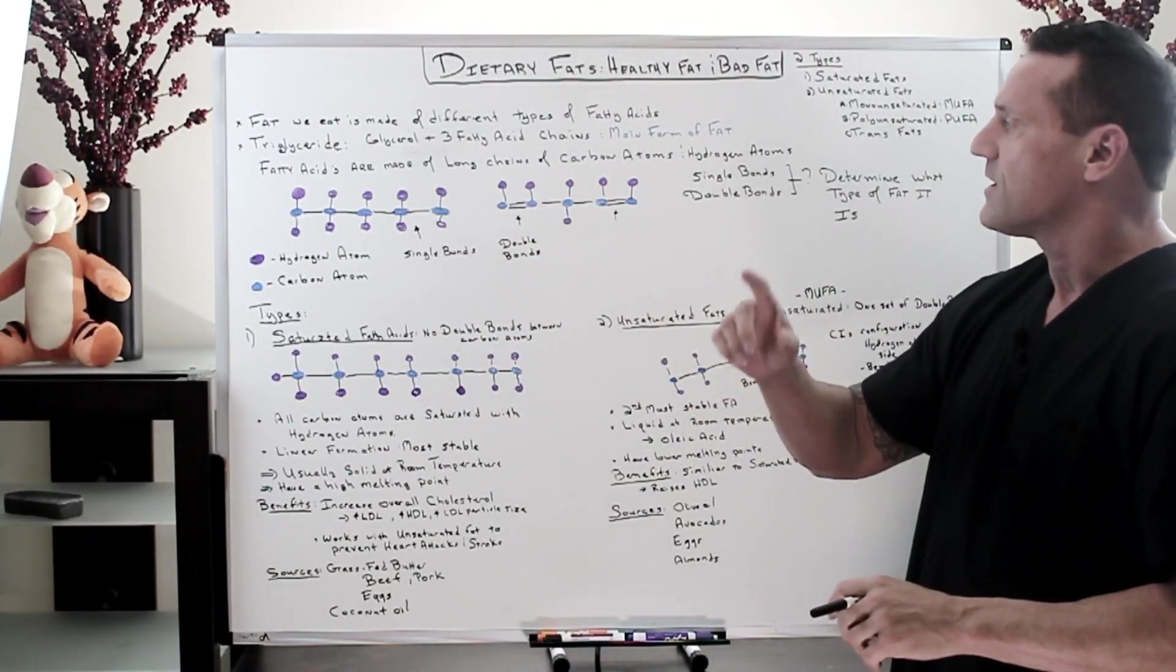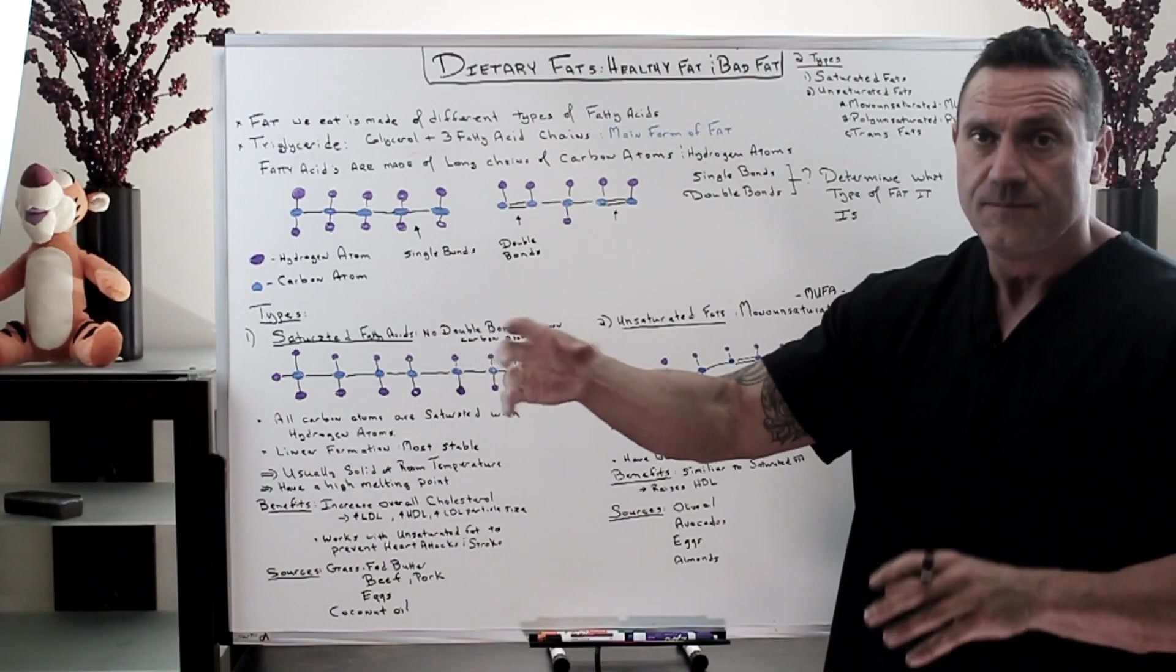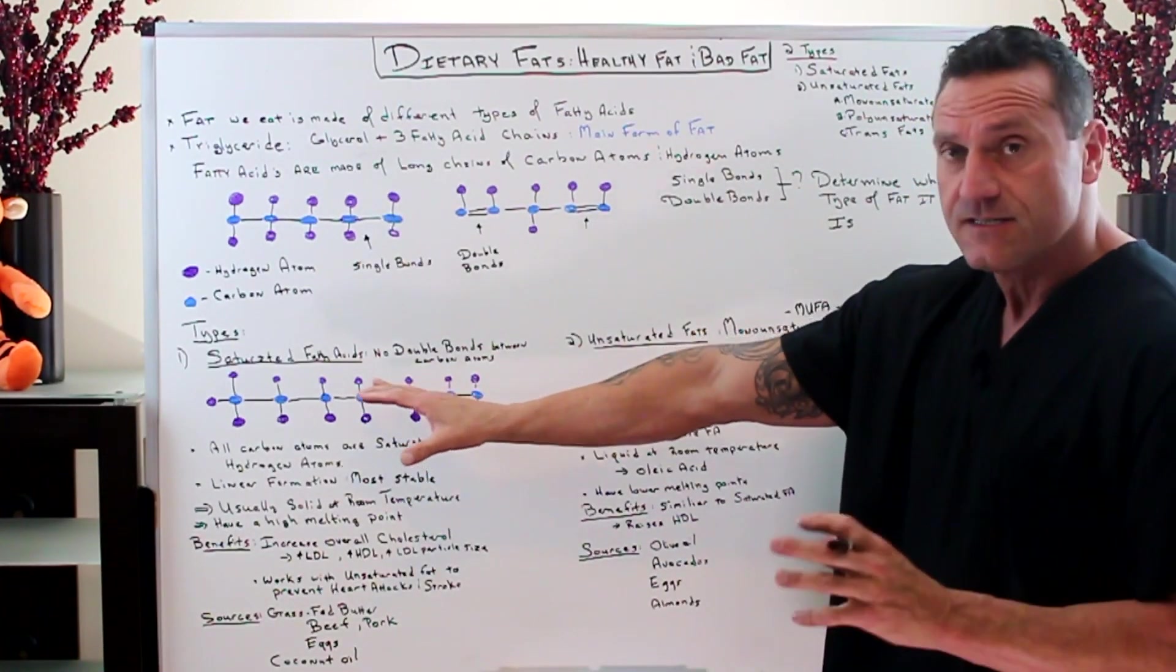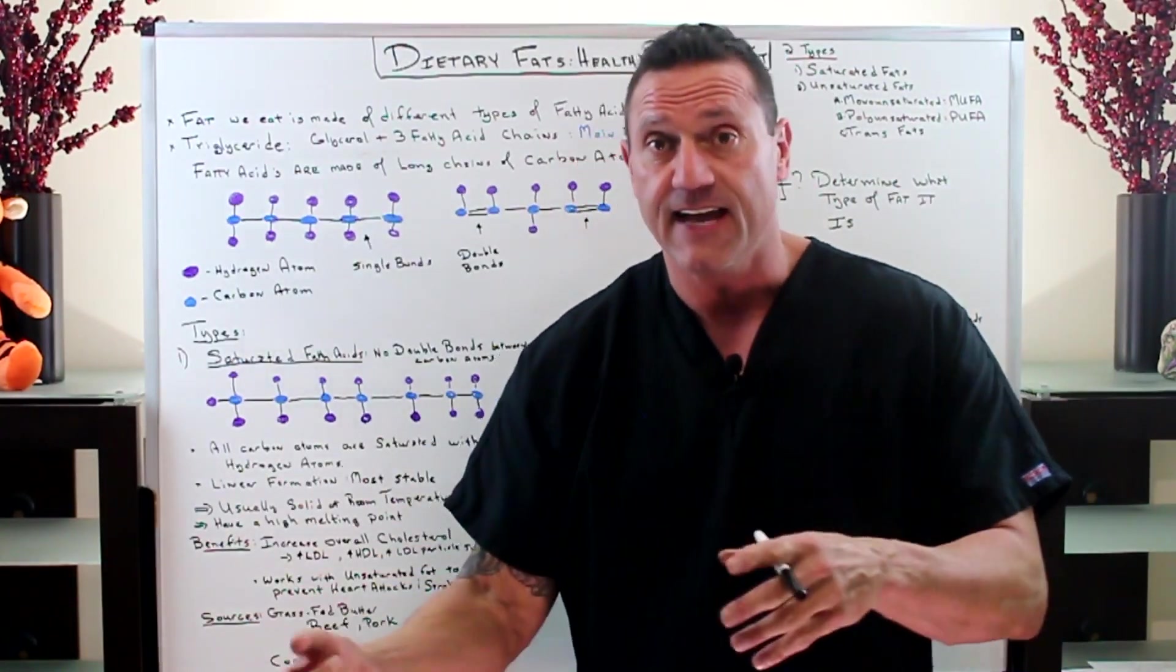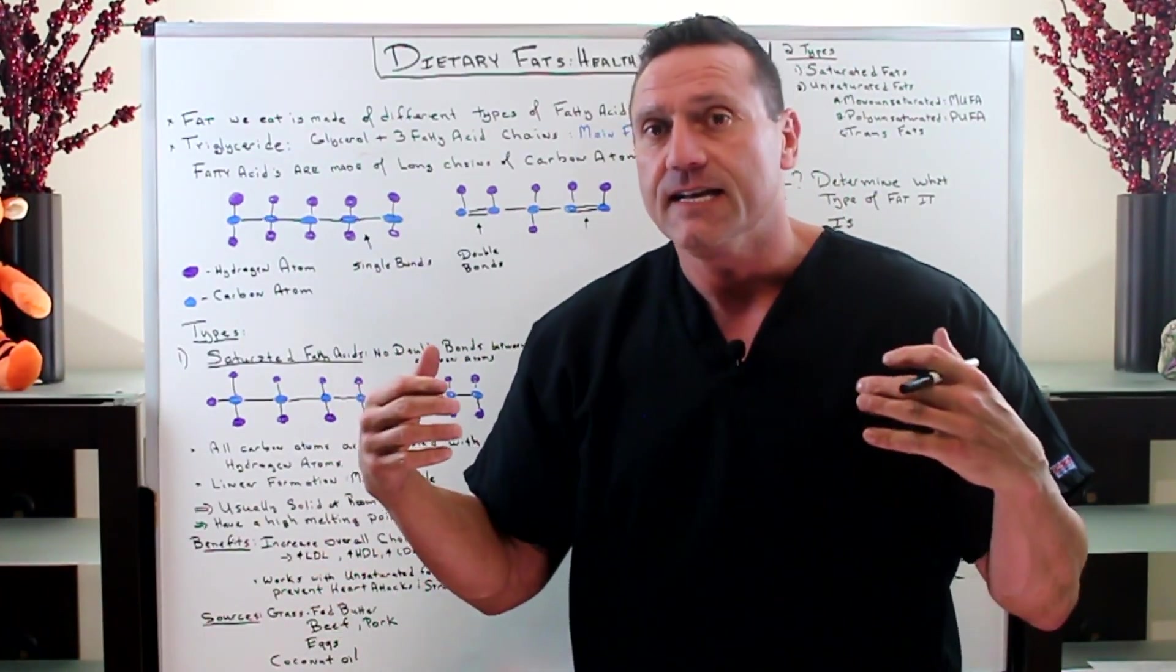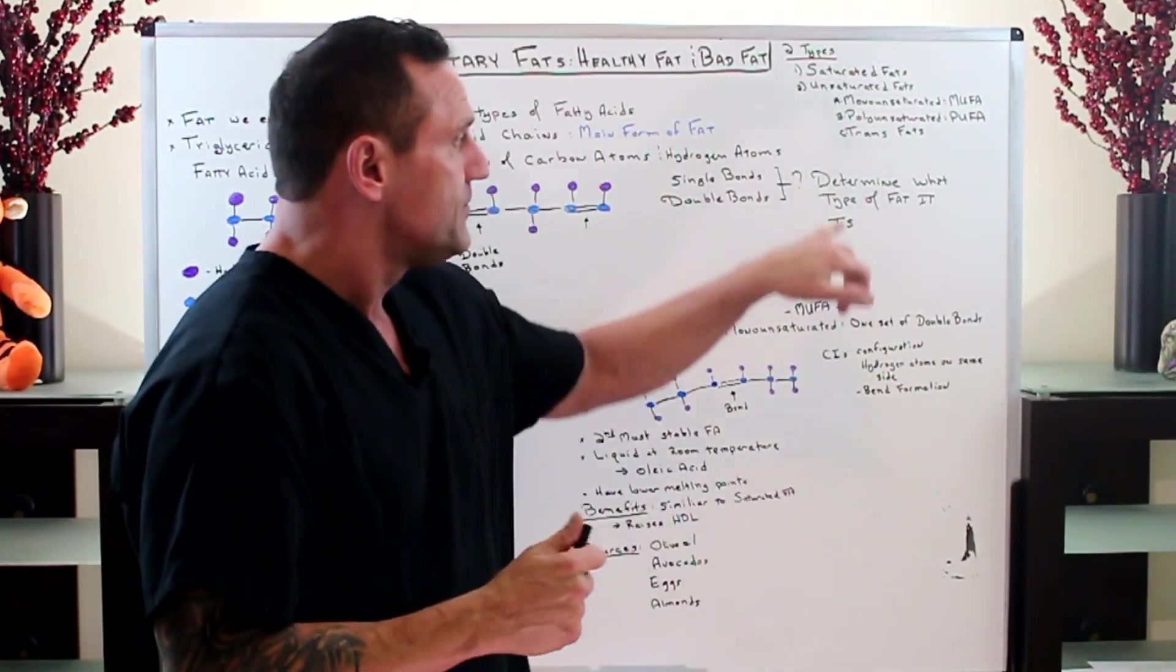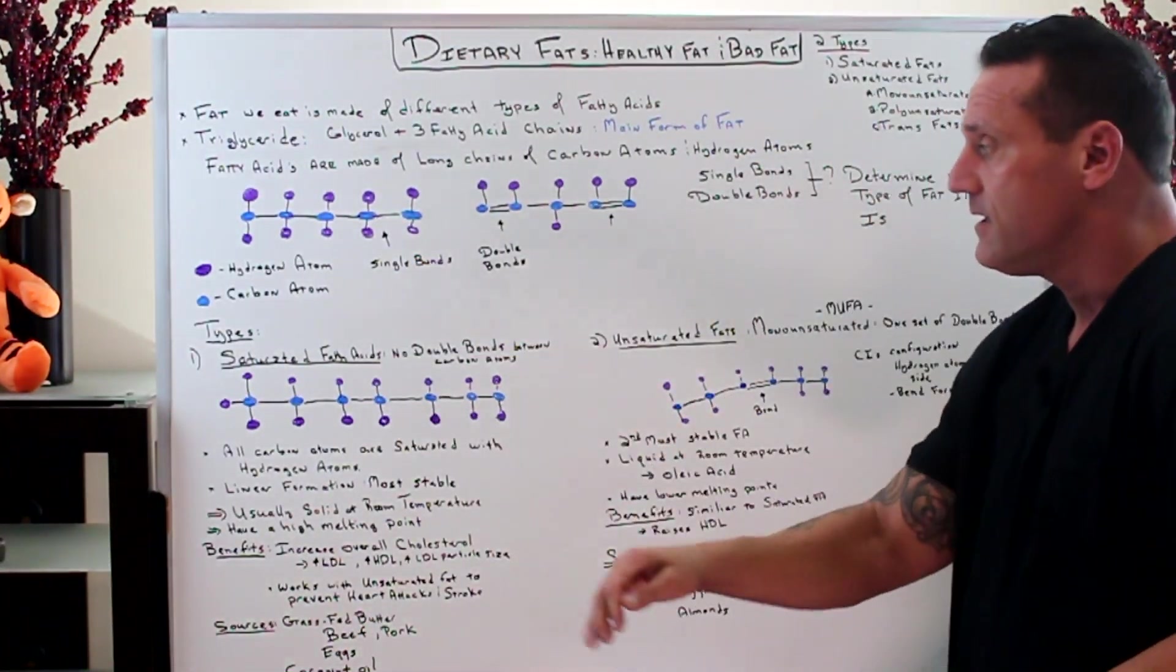What's going on with these fatty acids? The fatty acids are made of long chains of carbon atoms and hydrogen atoms. The main difference is: is it a single bond or a double bond? Does it have a little kink in it? The single bonds and double bonds determine what type of fat it is. When it comes down to fats, let's start off with saturated fat.